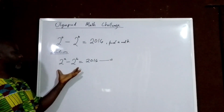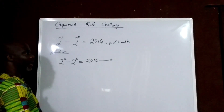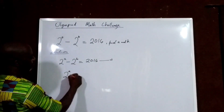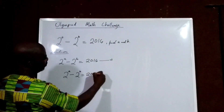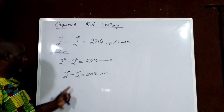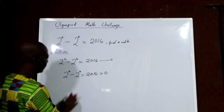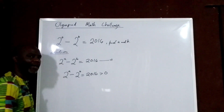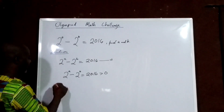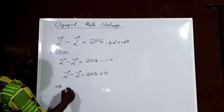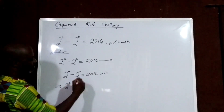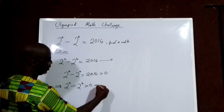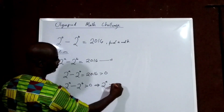Now, from the question, from the way it looks, we can assume that for this to be true, then 2 to the power of A minus 2 to the power of B equals 2016 must be greater than 0. What that means is that 2 to the power of A must be greater than 2 to the power of B.